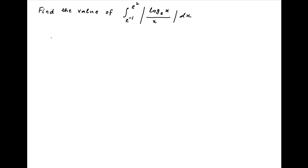We start by evaluating the denominator of the integrand, which is modulus of x, between the limits of integration. Note that both e raised to the power minus 1 and e square are positive. Therefore the denominator, modulus of x, is equal to x for all values of x lying between e raised to the power minus 1 and e square.